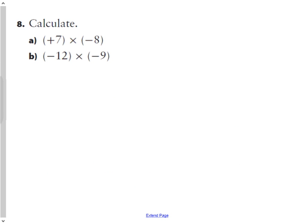Question eight says calculate. So we're going to do the same thing as before. We're just going to calculate our product. So seven times eight is 56, and 12 times nine, well, 10 times nine is 90 and two times nine is 18, so 90 and 18 is 108. So now that we have our products down, we're going to check for our signs. This will be a negative because our integer signs are different, and this will be a positive because our integer signs are the same.